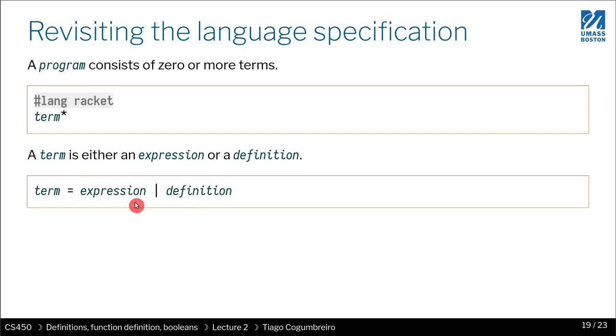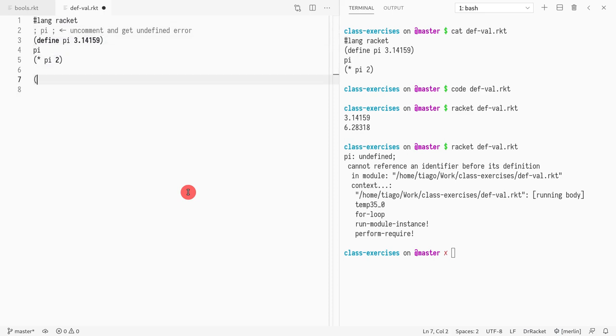Why is that? This is a very important restriction because it says that you cannot create a definition when you're calling a function. If define were an expression, then I could declare a variable inside a function call. Why not?